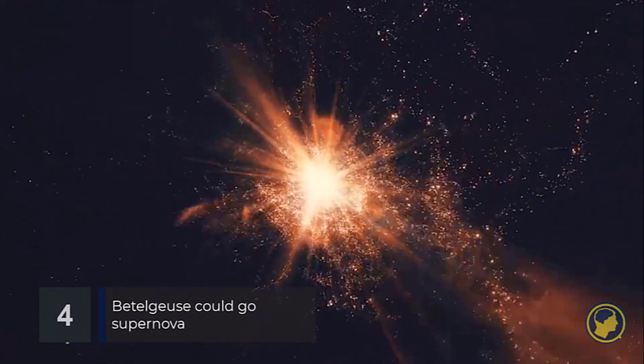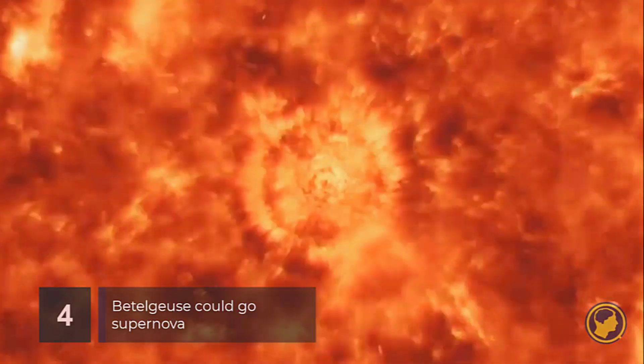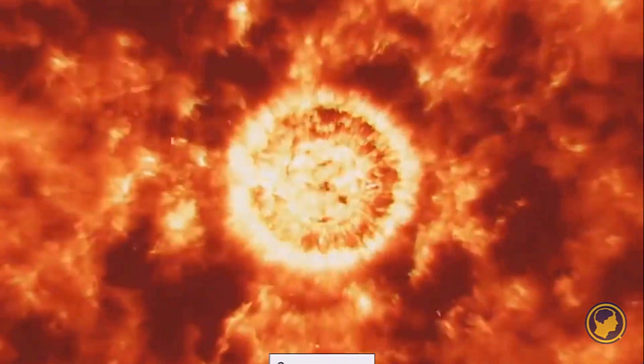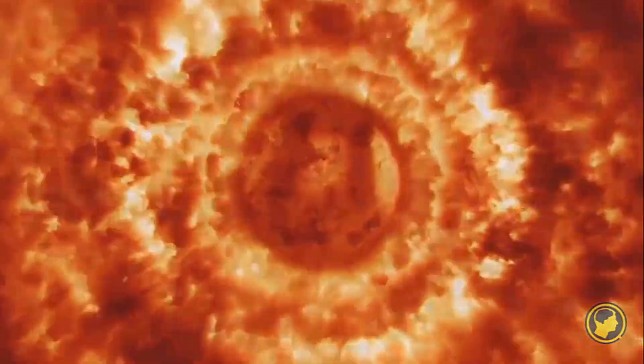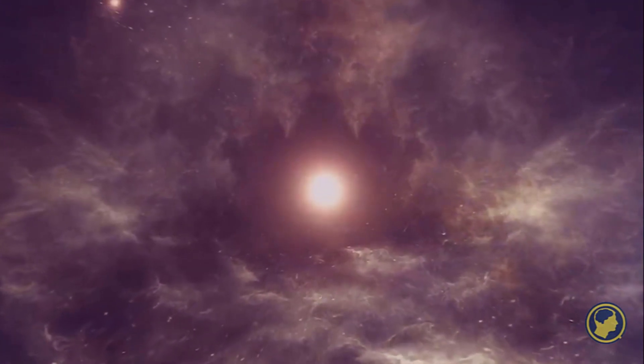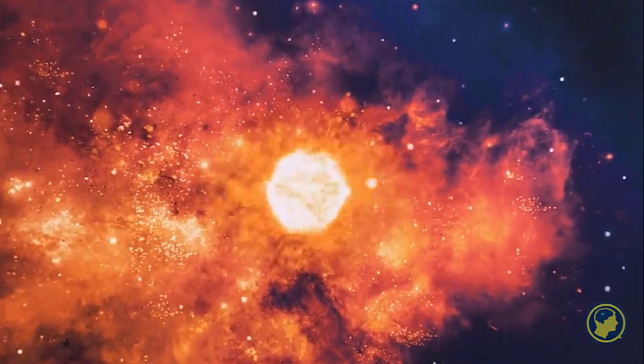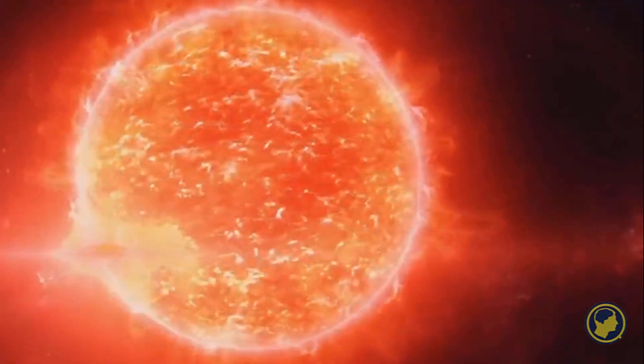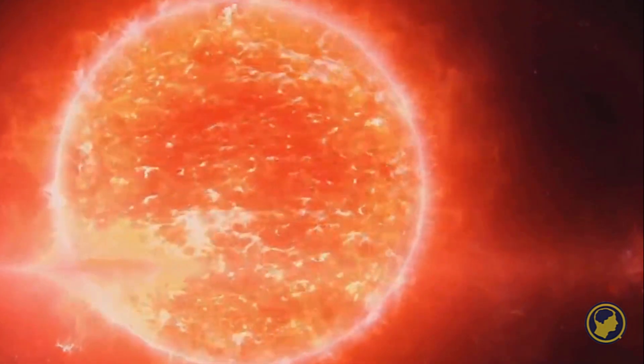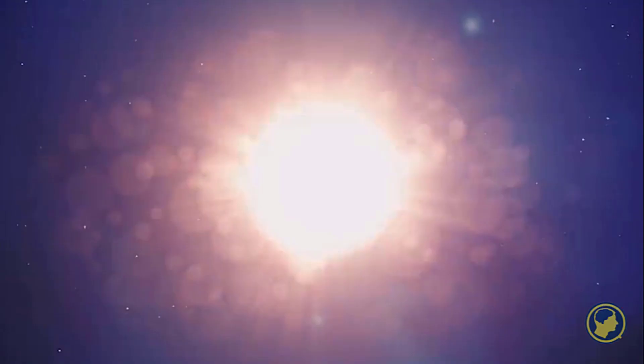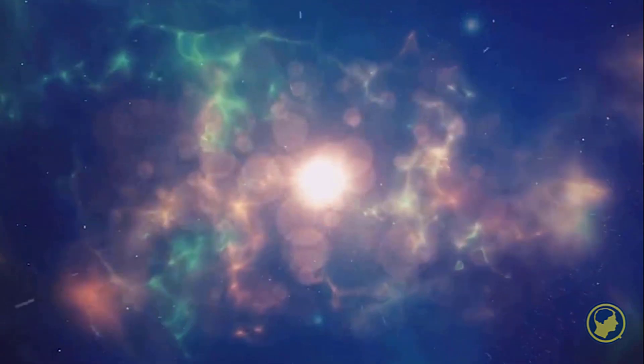As a star ages, it quickly burns out its reserves of hydrogen fuel and switches to helium and other elements. During this expansion and cooling, the star is called a giant. During fusion, heavier and heavier atoms are created until its core becomes iron, at which point it runs out of fuel.